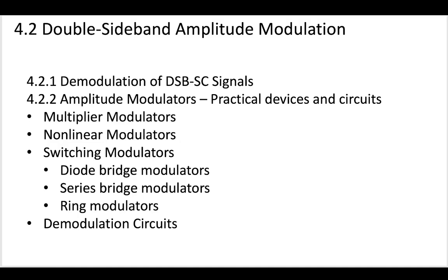We also discussed why it's called the double sideband amplitude modulation, due to those upper and lower sidebands that you get when you shift your baseband message, MT, out to some carrier frequency, FC. Now, this series of videos is more going to be focusing on practical devices and circuits that can be used to complete that modulation and demodulation.